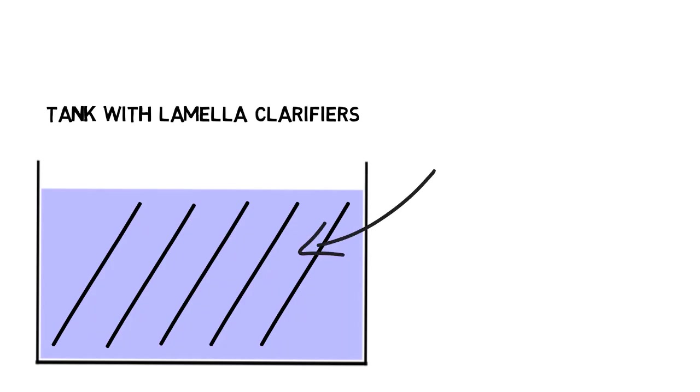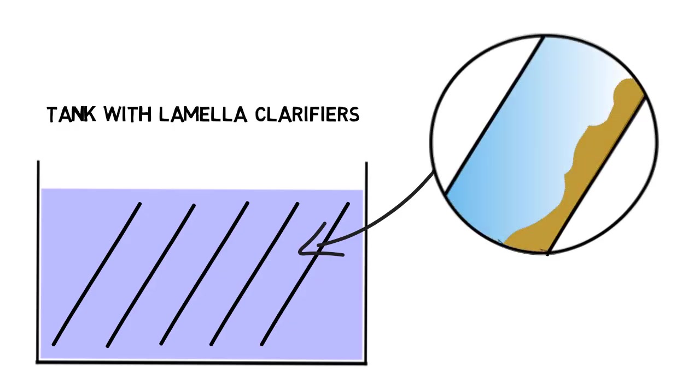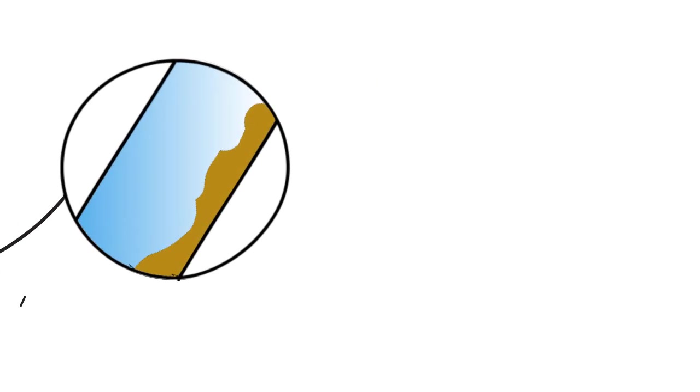Another advantage is that incline plates result in a counter-current flow. One upward flow of water and one downward stream of sludge.